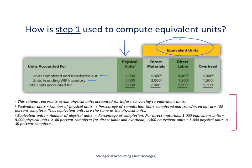We calculate the equivalent units based on the percentage of completion given in the prior slide. We're not worried about equivalent units for the 4,000 units completed and transferred out — they're 100% complete by definition. We're focusing on the 5,000 units still in work in process. For direct materials at 60% completion: 60% times 5,000 gives us 3,000 equivalent units. For direct labor and overhead at 30% completion: 30% times 5,000 is 1,500 equivalent units each. Adding to the 4,000 units, total equivalent units are 7,000 for direct materials, 5,500 for direct labor, and 5,500 for overhead.